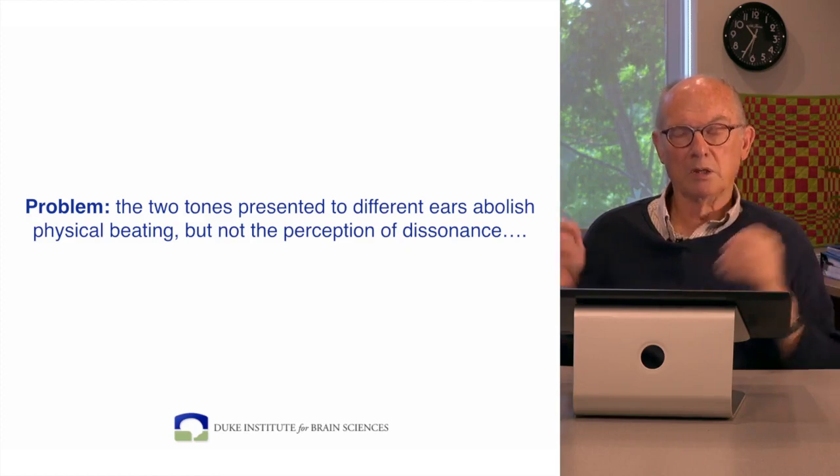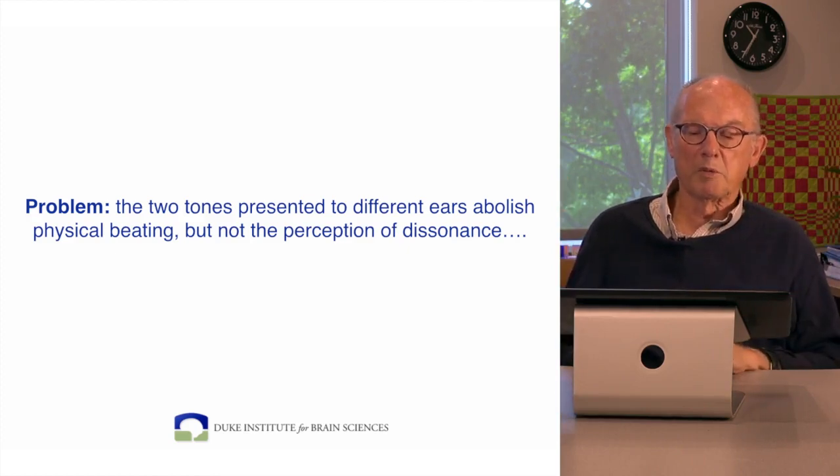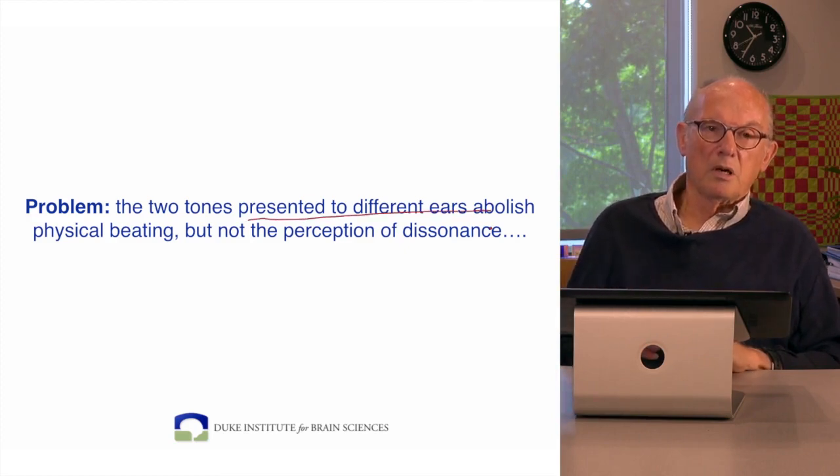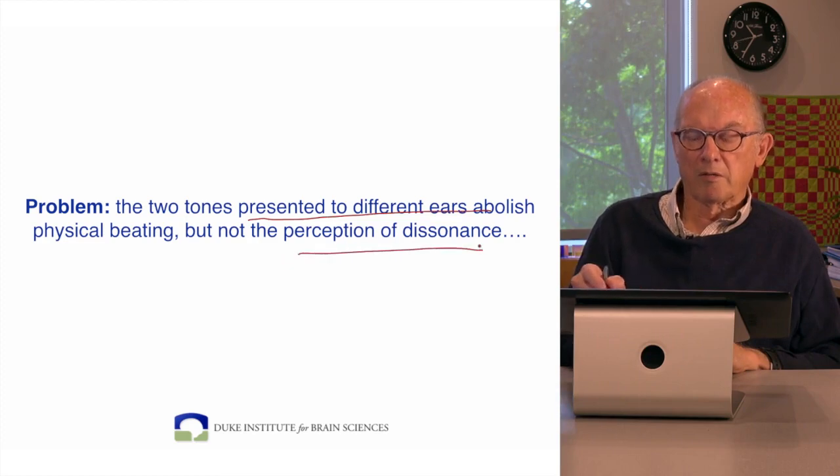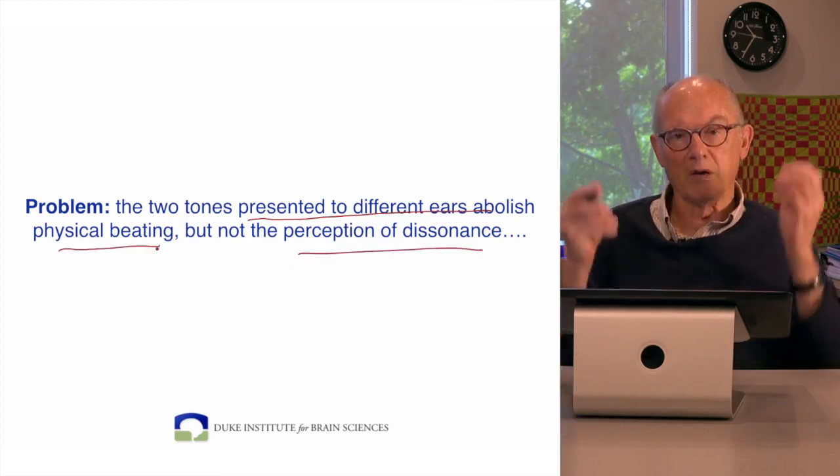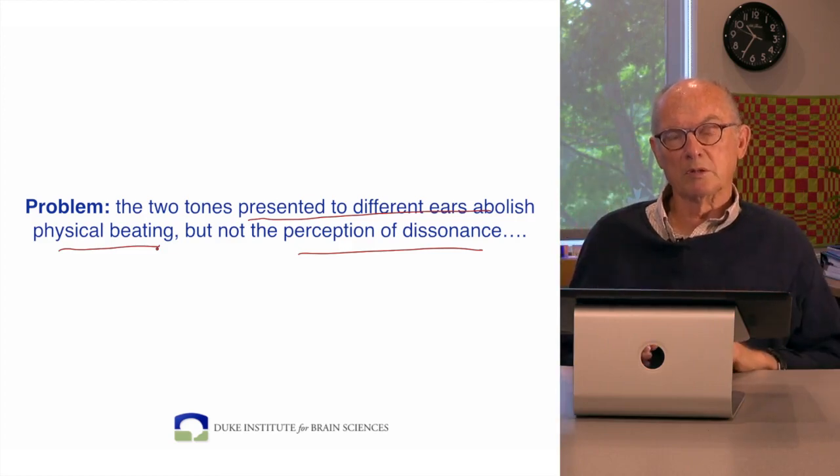The C and the C sharp, for example, are being presented to the right ear and the left ear respectively. So even though they're presented to the two ears, you still hear them as dissonant tone combinations, even though the physical beating by virtue of their independent presentation to the right and the left ear is gone.